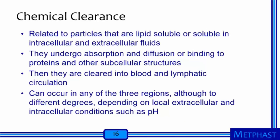The respiratory tract is not a passive receptacle for particles — the human body has mechanisms for clearing them. Clearance of deposited particles occurs by chemical clearance and physical translocation. Chemical clearance is related to particles that are lipid soluble or soluble in intracellular and extracellular fluids. These undergo absorption, diffusion, or binding to proteins and subcellular structures, then are cleared into blood and lymphatic circulation. This can occur in any of the three regions, though to different degrees depending on local conditions such as pH.